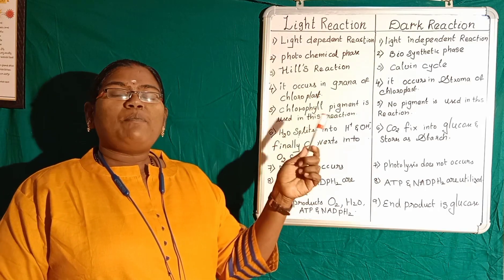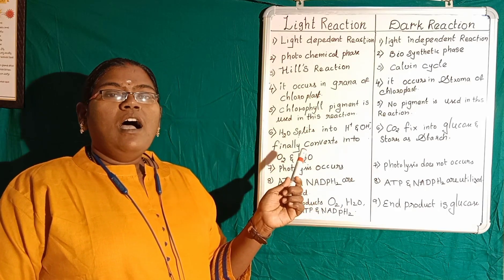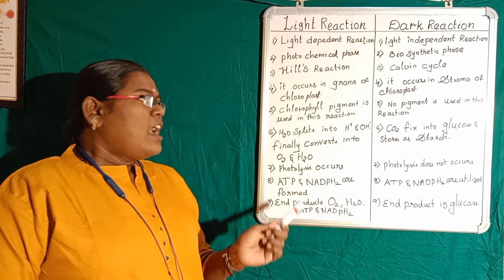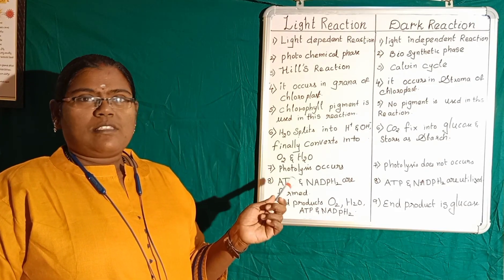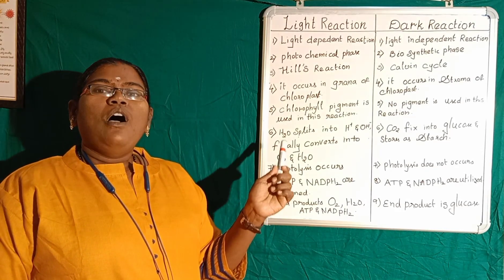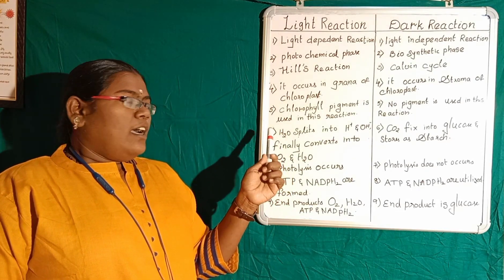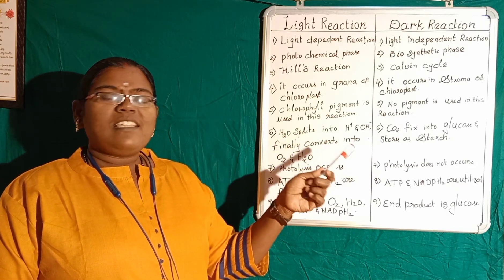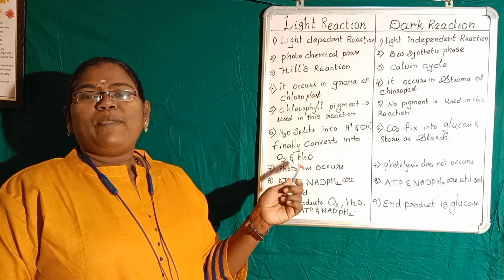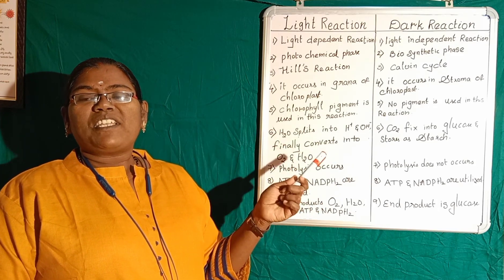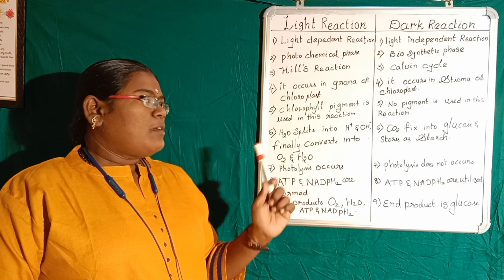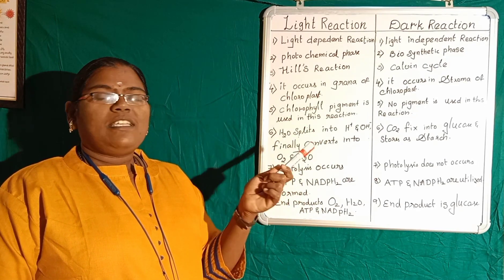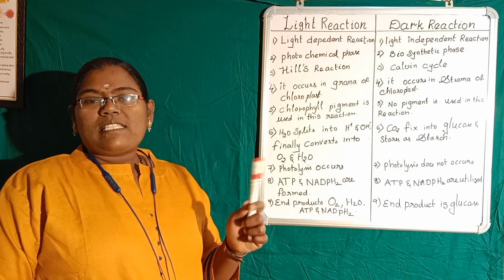Chlorophyll pigment is used in the light reaction, but there is no need of any pigment in the dark reaction. In the light reaction, the water molecule is going to split into hydrogen ions and hydroxyl ions. Finally, they go through a series of steps and convert into oxygen and water molecules. This water is utilized in the plant and oxygen comes out as a byproduct.